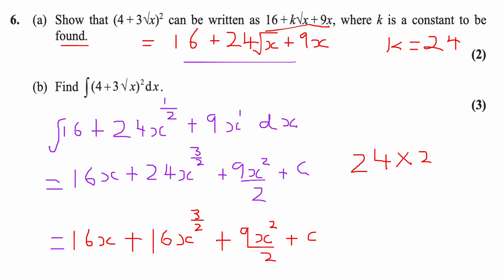To clarify the simplification: 24 divided by 3 is 8, then doubled gives 16. Dividing by 3/2 is the same as multiplying by 2/3.